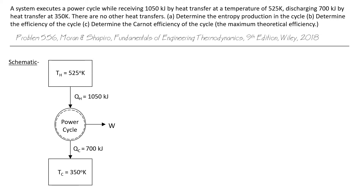We are asked to: A) determine the entropy production in the cycle, B) determine the efficiency of the cycle, and C) determine the Carnot efficiency of the cycle, where the Carnot efficiency is just the maximum theoretical efficiency. I'll talk about the Carnot cycle momentarily.